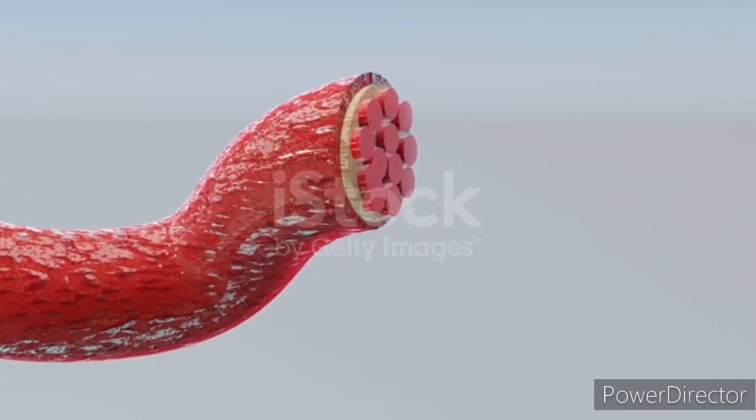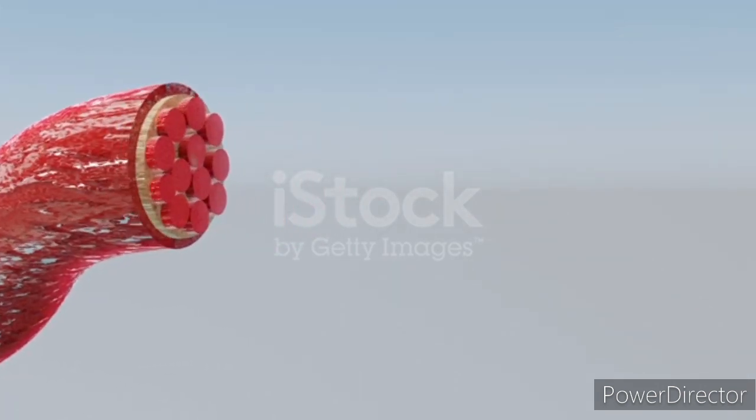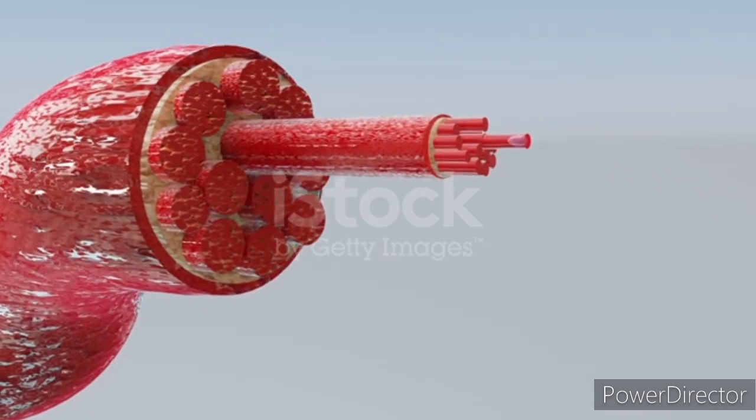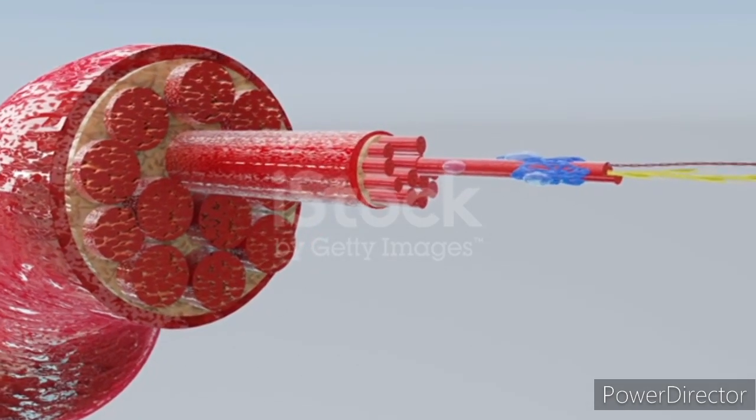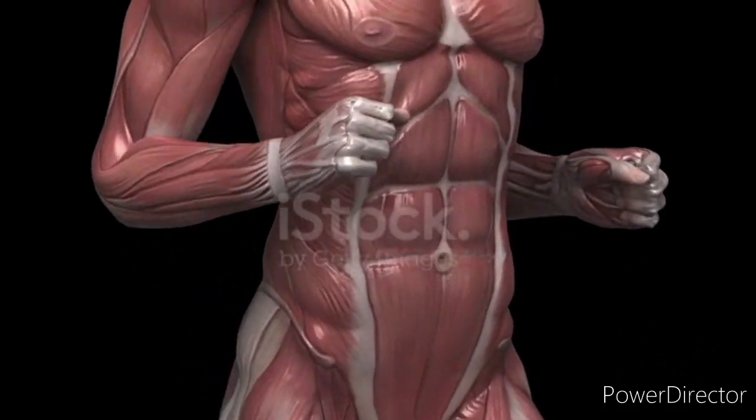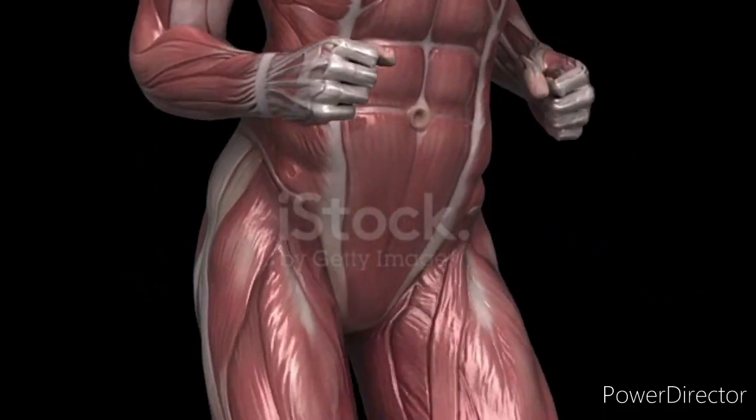Muscle cells contain an extensive endoplasmic reticulum network called the sarcoplasmic reticulum, which stores calcium ions and plays a pivotal role in muscle contraction and relaxation by releasing and sequestering calcium during muscle activity.